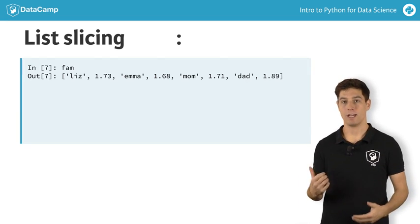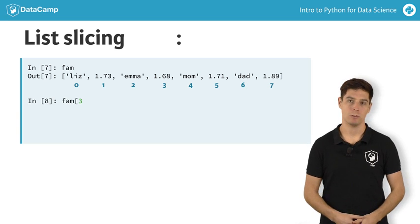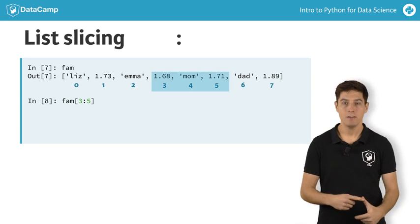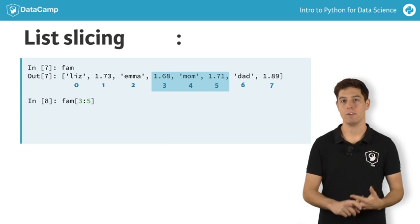Let's first have another look at the list, and then try this piece of code. Can you guess what it'll return? A list with the float 1.68, the string mom, and the float 1.71.